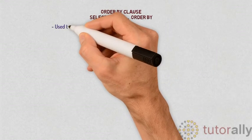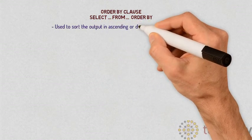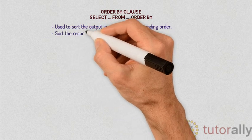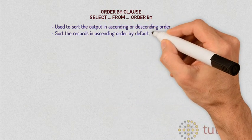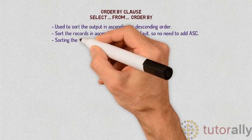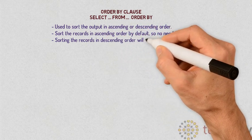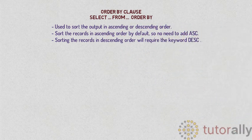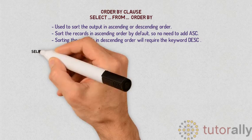The ORDER BY keyword is used to sort the output in ascending or descending order. The ORDER BY keyword sorts the records in ascending order by default. To sort the records in descending order, use the keyword DESC.